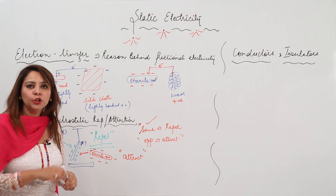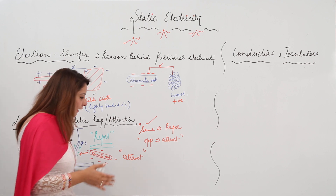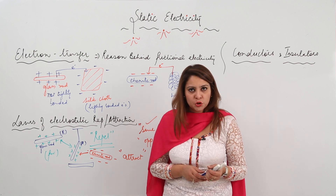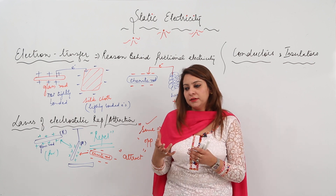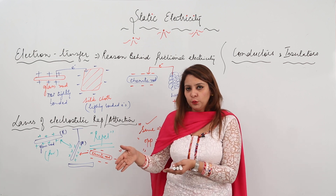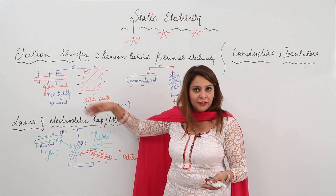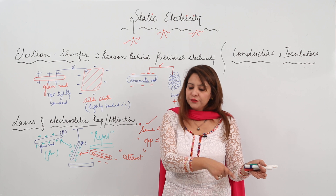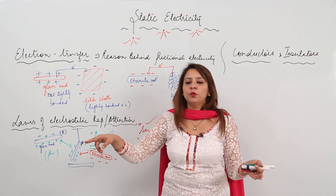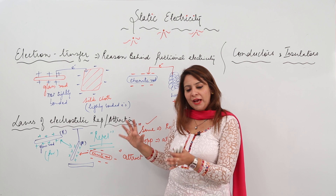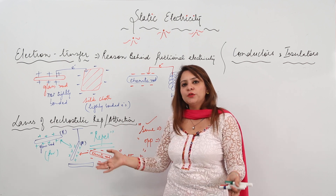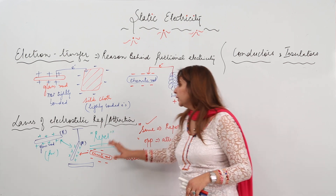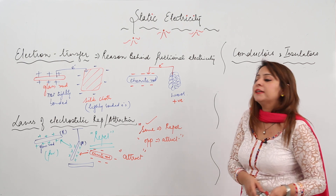So that means same charges repel and opposite charges attract each other. This is the law of electrostatic repulsion and attraction. After rubbing, bodies become charged, and the type of charge a body acquires depends on the transfer of electrons. The body losing electrons acquires a positive charge, the body gaining electrons acquires a negative charge. Bodies with the same charge repel, bodies with opposite charge attract.